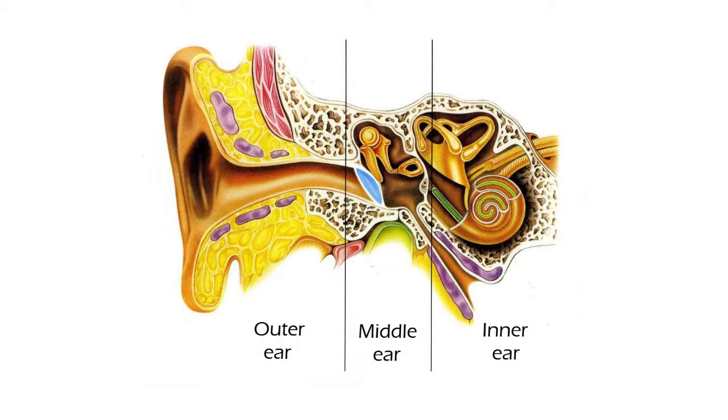The human ear is divided in three sections: the outer ear, the middle ear, and the inner ear.